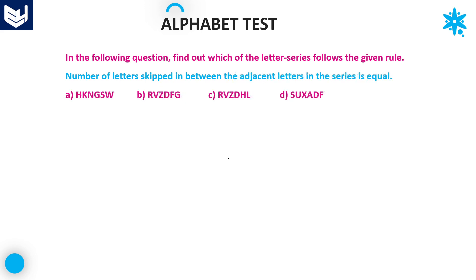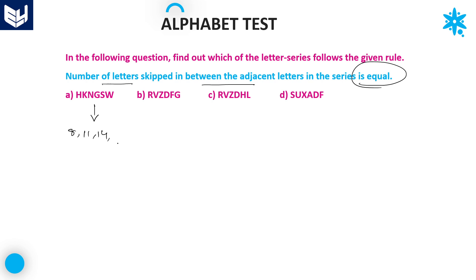Let's move on to the next question. Here also, one rule is given — the number of letters skipped in between adjacent letters is equal. Equal in the sense the difference should also be equal. Let's write the letters with their respective numbers. H is equal to 8, after that 11, 14, 7.